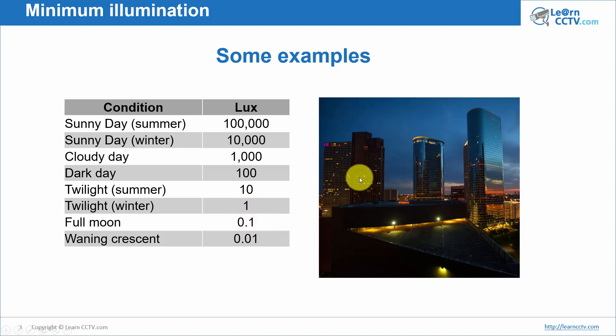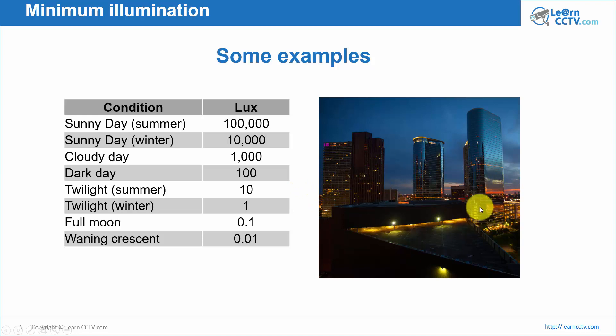In situations where you don't have too much light and you can't use infrared illumination — for example, you cannot illuminate an entire city with infrared light — infrared is usually used at short range, in a place you control, indoors or outdoors at close distances.